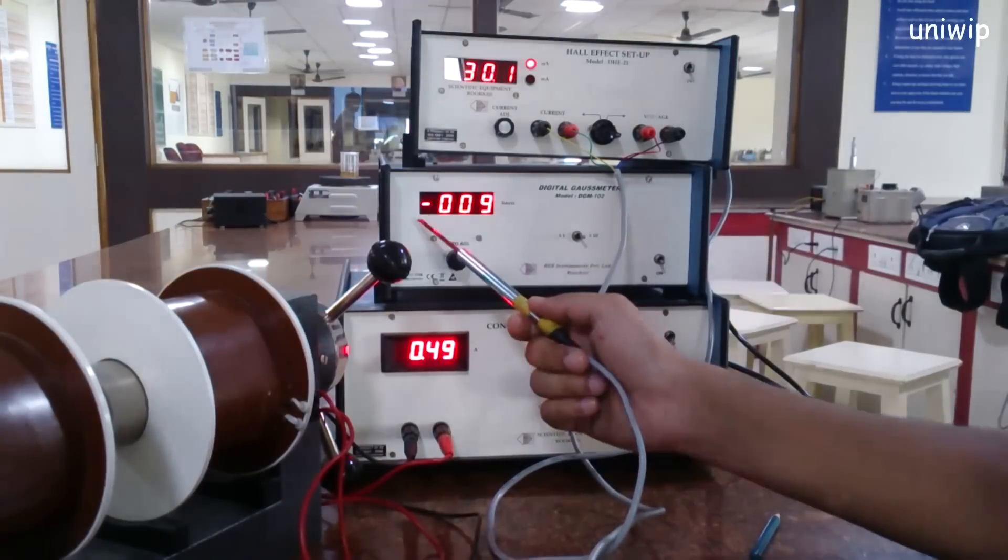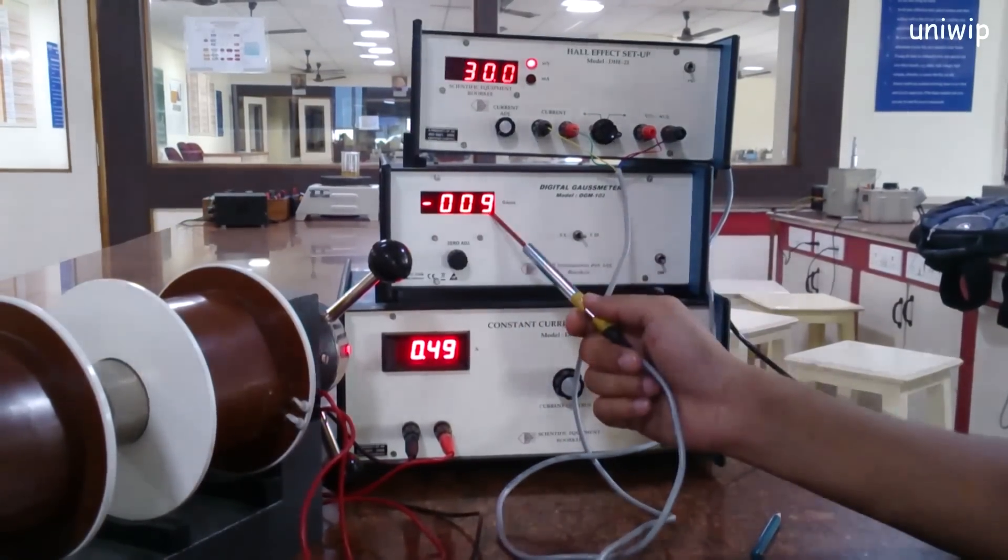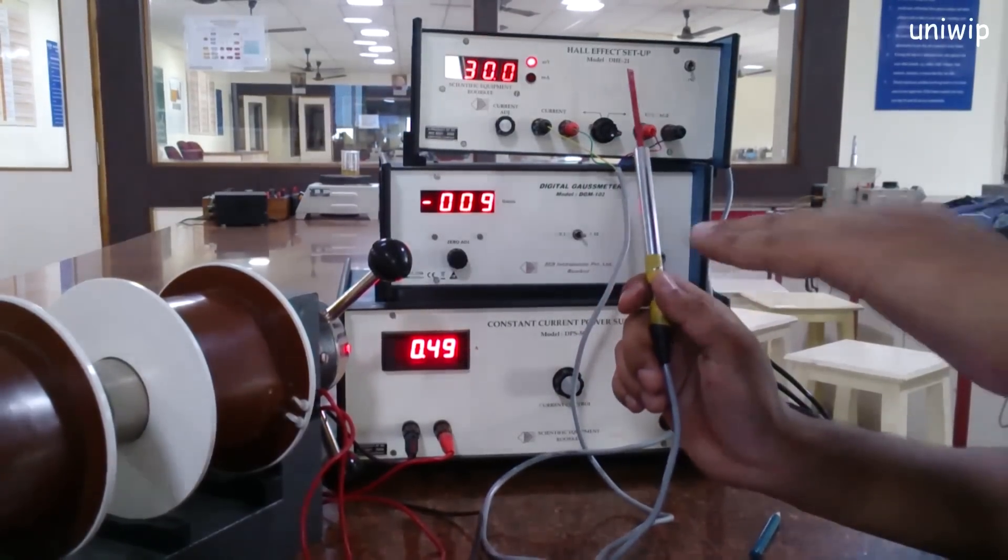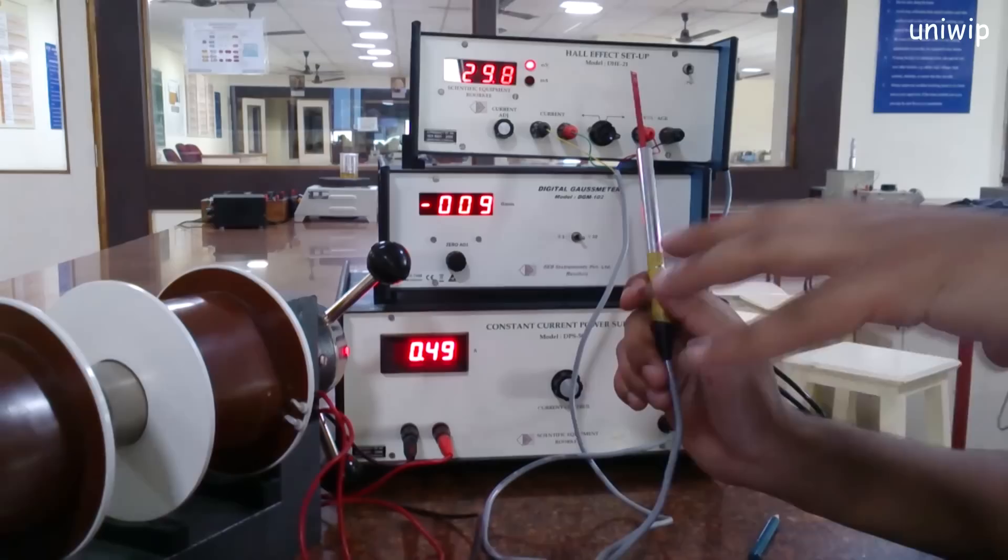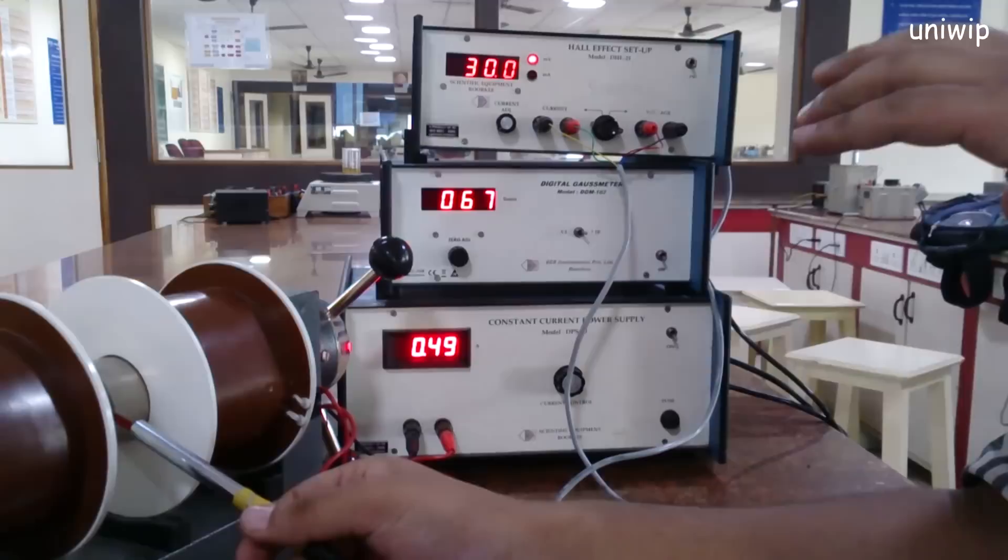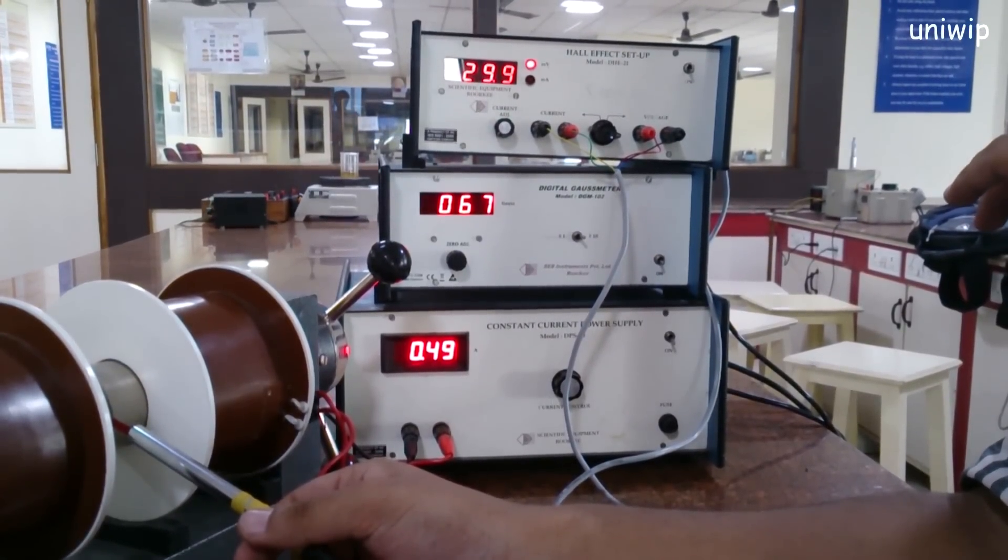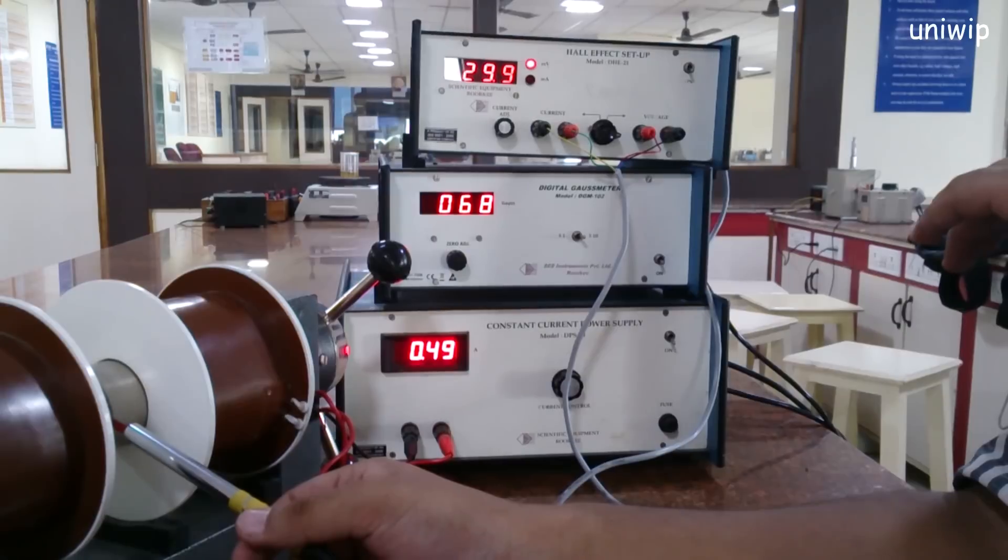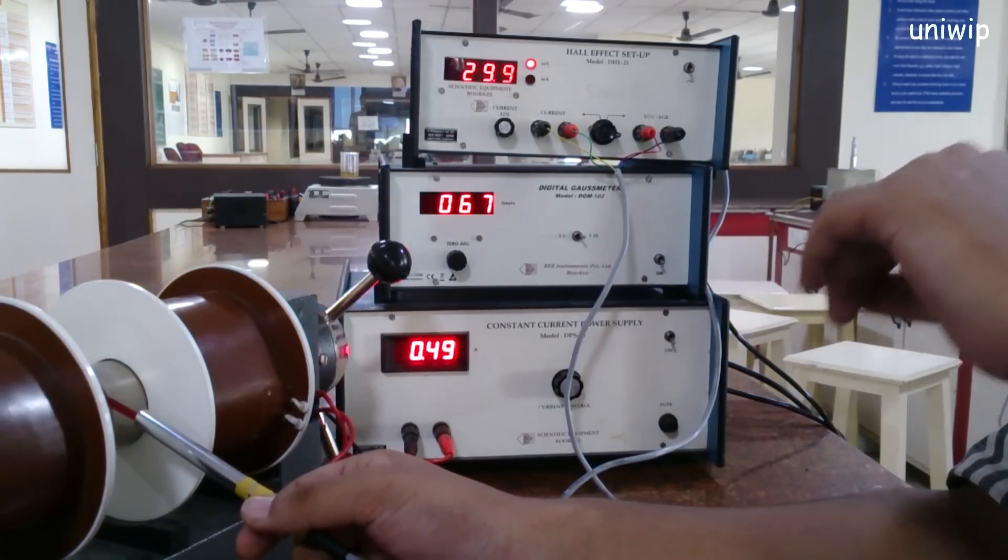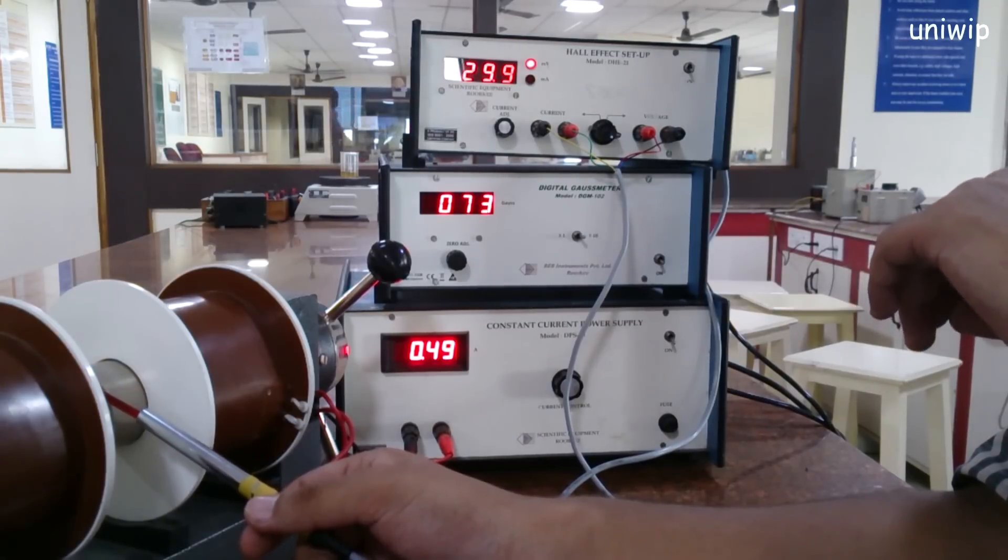You can see the reading is already 9 gauss. Now, when the mode is times 10, it's 90 gauss minus. That means it's below zero, which means I have to add this value. Whatever reading I'm getting, suppose it's 67, that is 670 gauss. I'm going to be adding plus 90. That will be my actual result, including the error in the device. This is a normal setup, and this is how it is done.